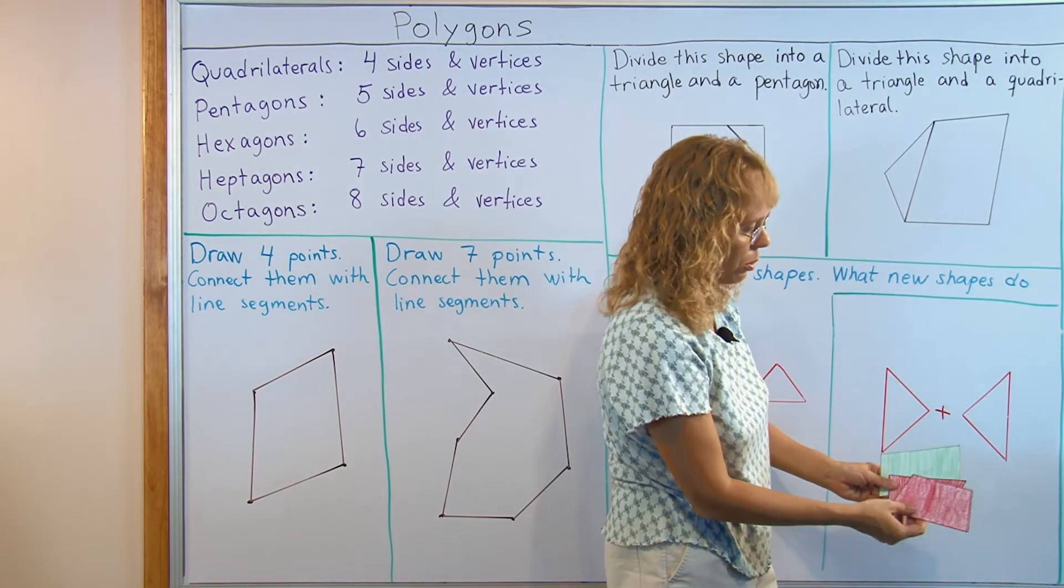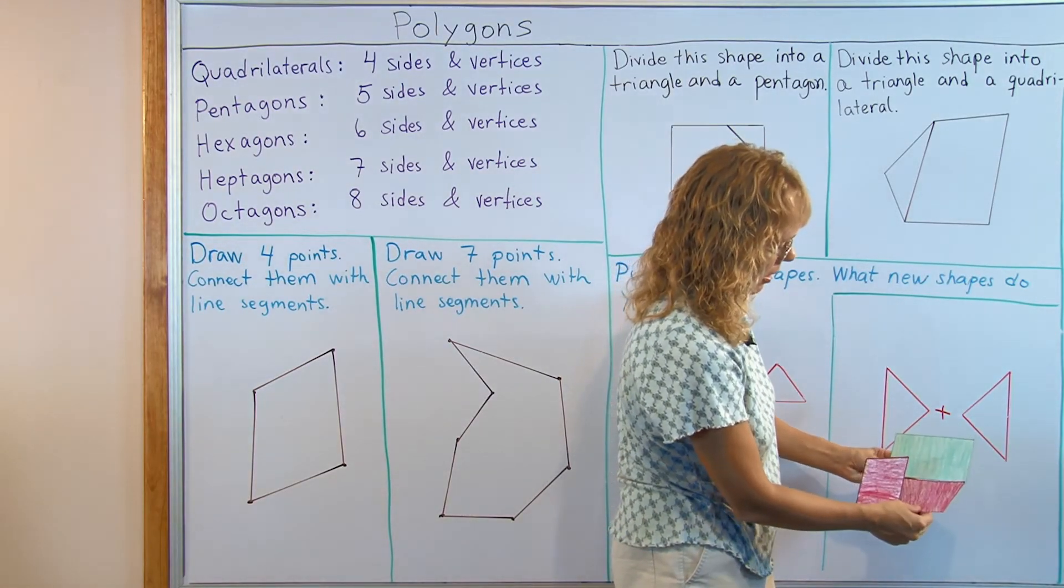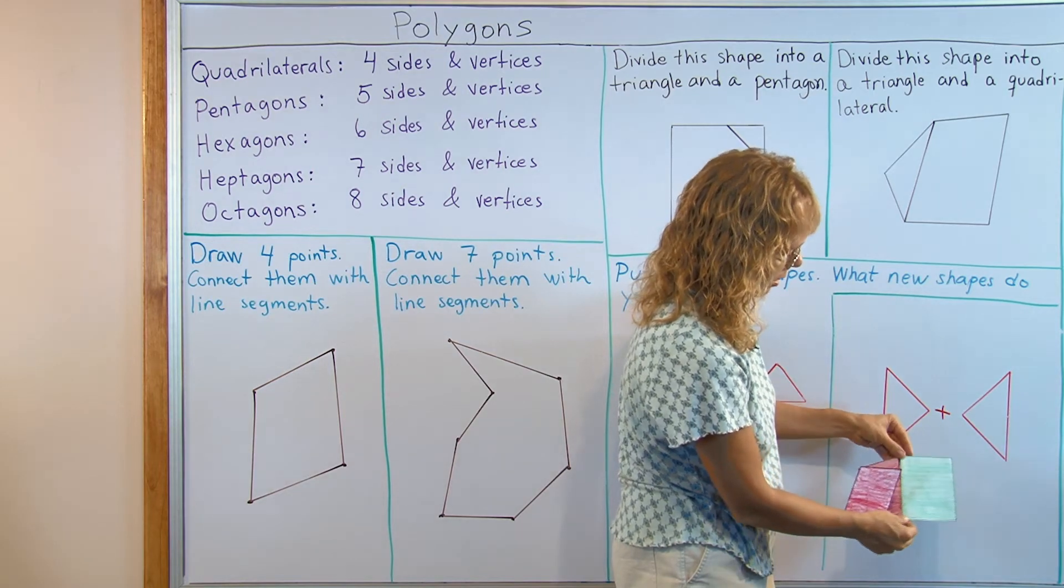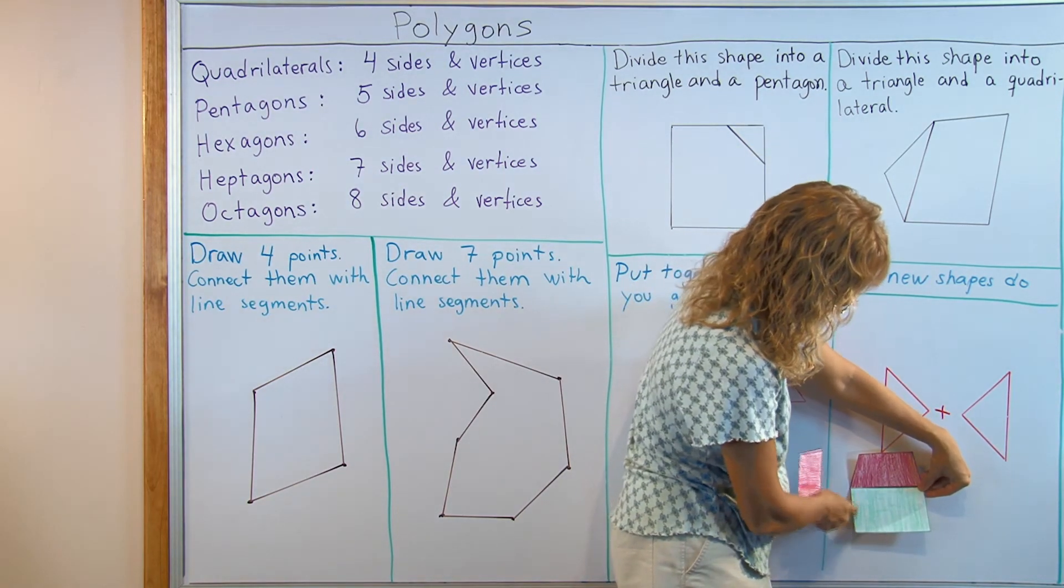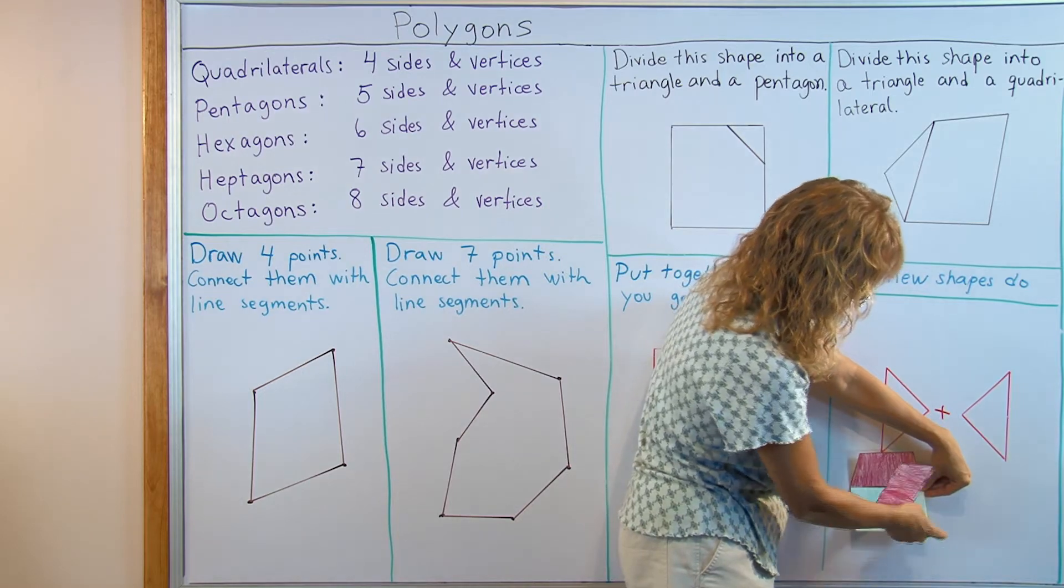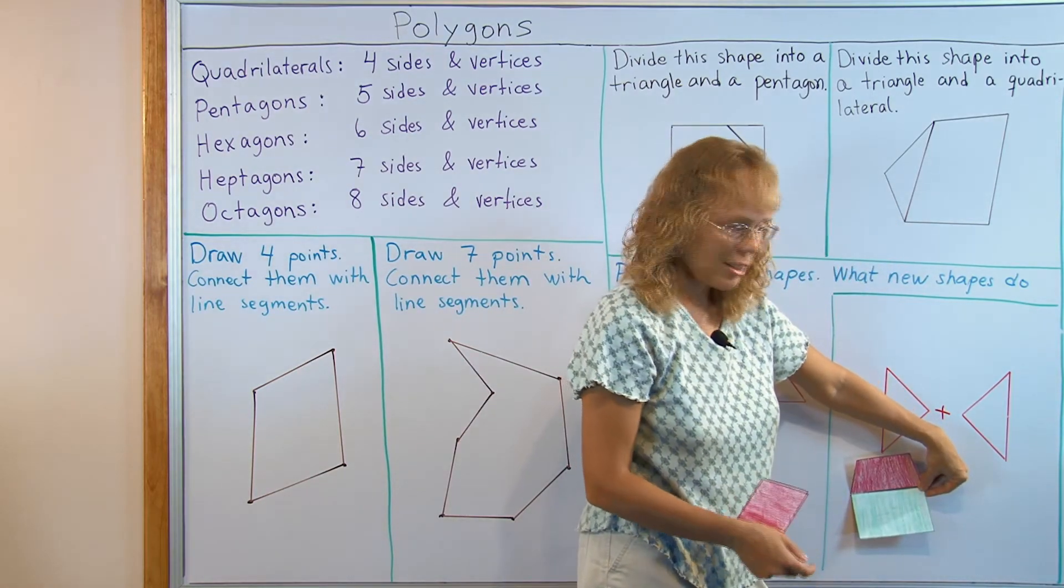Here I have a rectangle and then two quadrilaterals. I can put the rectangle and quadrilateral together like that. I would have one, two, three, four, five, six. A hexagon again, right?